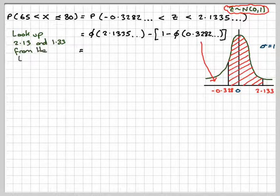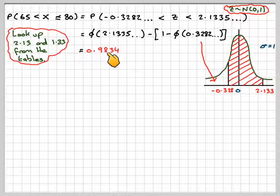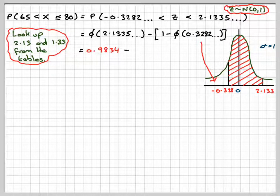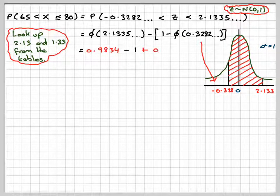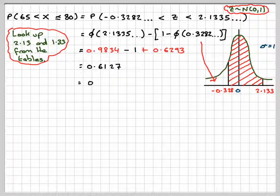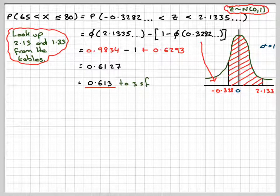So we'll look at those two values up in our table. That's going to give me 0.9835, and I'm going to look up 1.33 here. So minus 1 plus, because minus times a minus, 0.6293. So it gives me 0.6127, which gives me 0.613 to 3 significant figures.